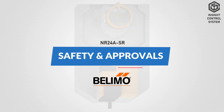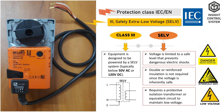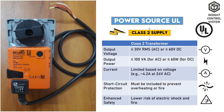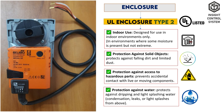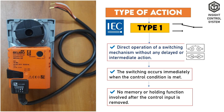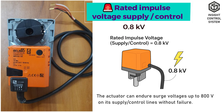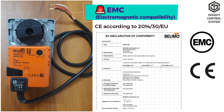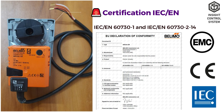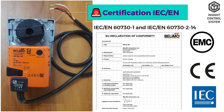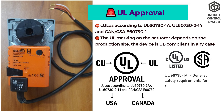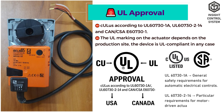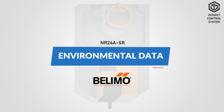Safety and approvals: protection class IEC EN is 3 — safety extra low voltage. Power source UL is class 2 supply. Enclosure is UL enclosure type 2. Type of action is type 1. Rated impulse voltage for supply and control is 0.8 kV. Electromagnetic compatibility is CE conformity. Certification is IEC EN. UL approval covers Canada and the United States by Underwriters Laboratories and the Canadian Standards Association.